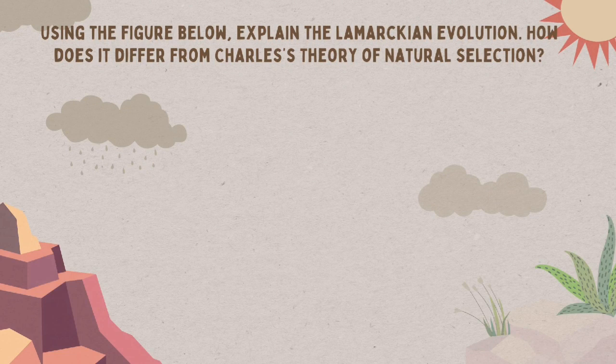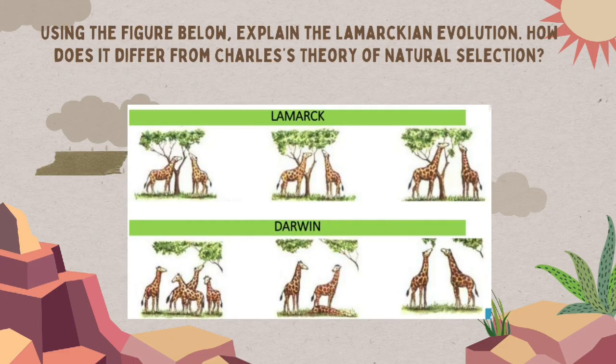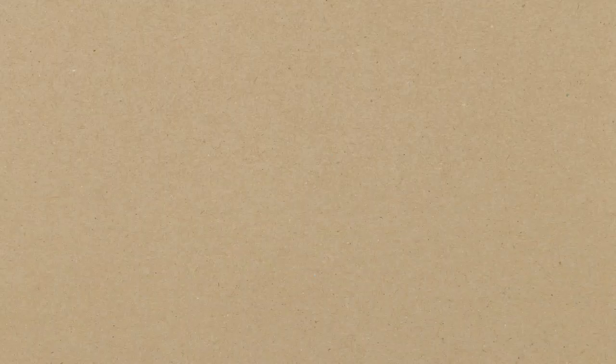Now, using the figure below, explain the Lamarckian evolution. How does it differ from Charles Darwin's theory of natural selection? Thank you for listening.